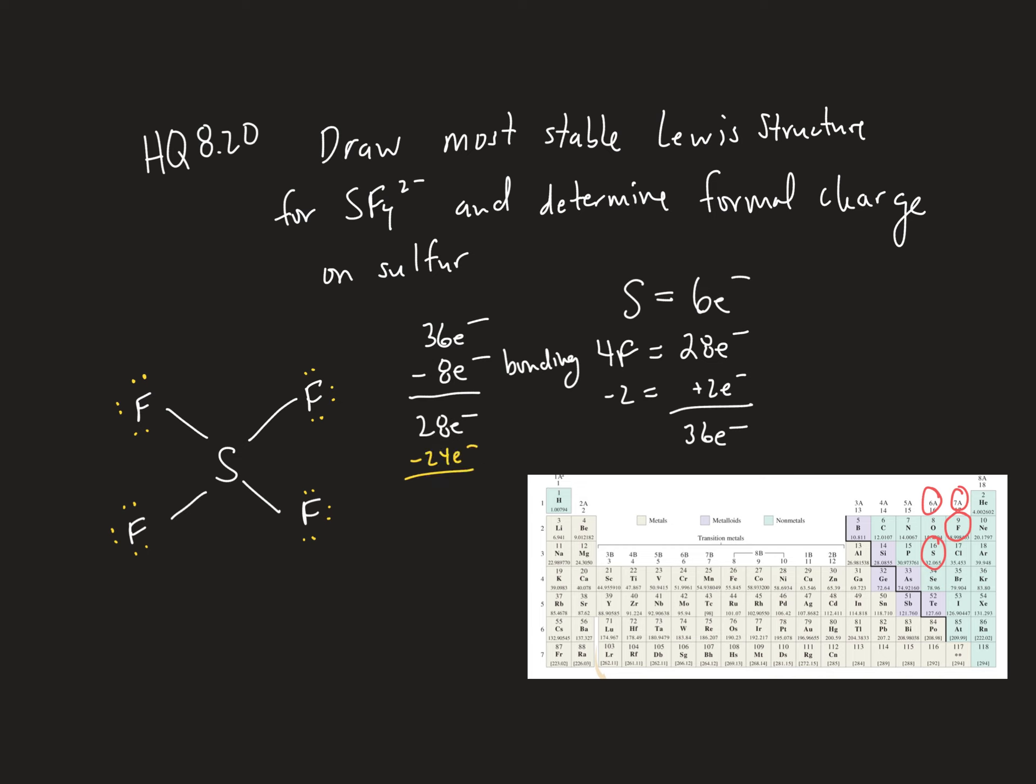So 28 minus 24, we've got 4 electrons left. Those last 4 electrons are going to be assigned to sulfur. Because I've got a full octet on fluorine, so I can't assign any more electrons there. I do have 8 electrons assigned to sulfur, but sulfur can break the octet rule.